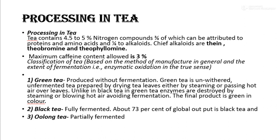Unlike in black tea, in green tea enzymes are destroyed by steaming or blowing hot air, avoiding fermentation. The final product is green in color. The second type is black tea, which is fully fermented — about 73% of global output is black tea. The third is oolong tea, which is partially fermented.